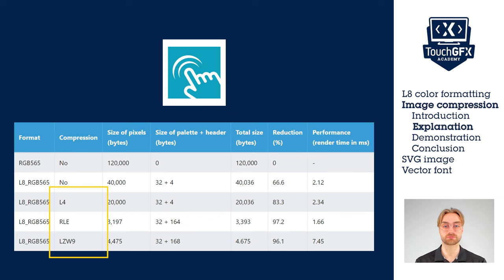L4 is a smaller version of L8 that can store 16 colors. LLE looks for repetition of pixels in a row and can only be used on images with a maximum of 64 colors. LZW looks for patterns in an image. Here you can see the different flash savings for each algorithm. In that case LLE is the best, but it is not always the case. It is recommended to keep the selection on auto to let Touch GFX choose the appropriate compression.